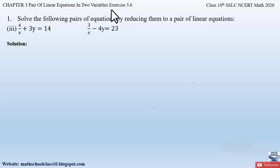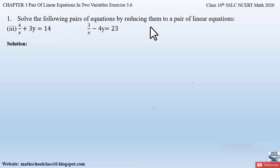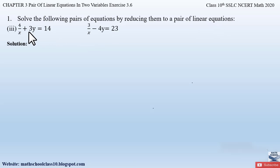Now quickly let us begin with the video. Part 3 from Question Number 1, Exercise 3.6, Chapter 3: Pair of Linear Equations in Two Variables says solve the following pair of equations by reducing them to a pair of linear equations. The two given equations are: 4/x + 3y = 14 and 3/x − 4y = 23.